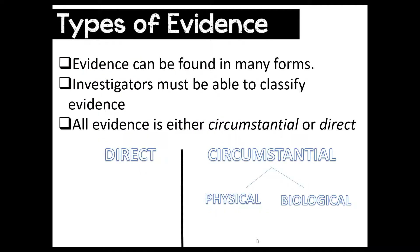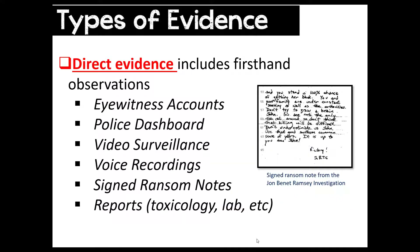Remember: all evidence can be either direct or circumstantial. Direct evidence is the most simplistic and cannot be further divided. It includes first-hand observations — for example, an eyewitness account, a police dashboard video, video surveillance from a convenience store, voice recordings, and signed ransom notes. A signed ransom note counts as direct evidence even if the signature is not recognizable. An unsigned ransom note, however, falls into a different category.